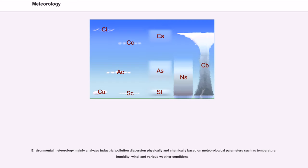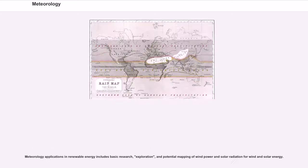Environmental meteorology mainly analyzes industrial pollution dispersion physically and chemically based on meteorological parameters such as temperature, humidity, wind, and various weather conditions. Meteorology applications in renewable energy includes basic research, exploration, and potential mapping of wind power and solar radiation for wind and solar energy.